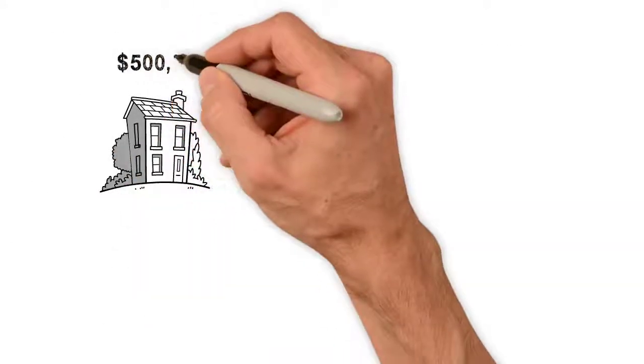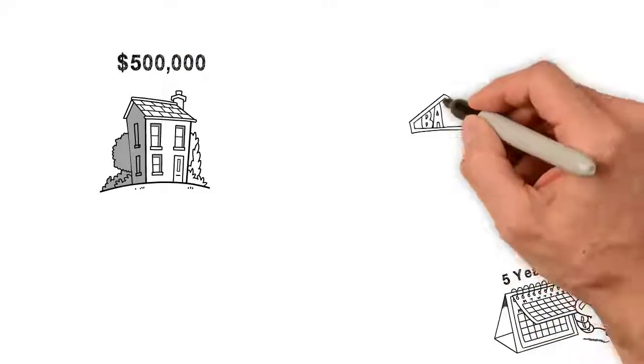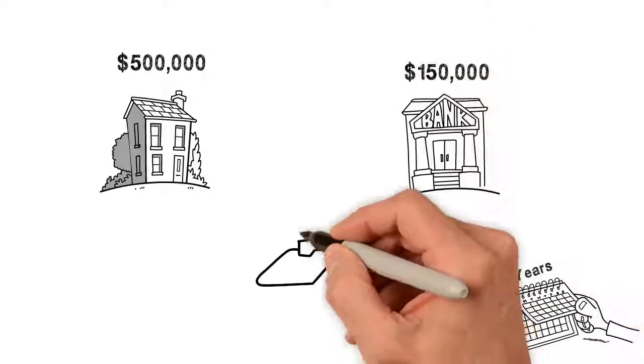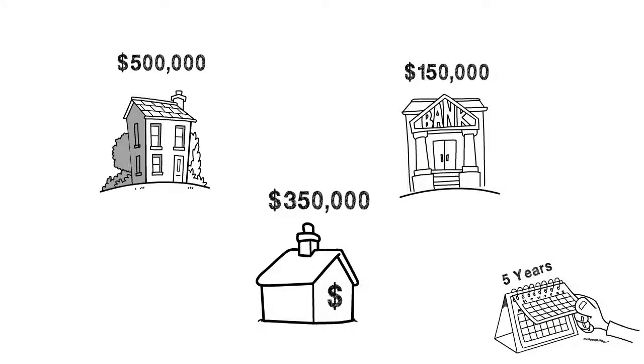If the house is valued at $500,000 in five years and you still owe $150,000, your equity will be $350,000.